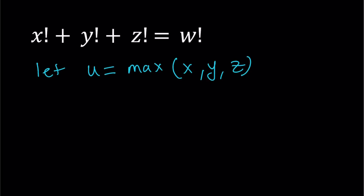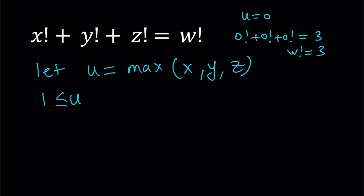Obviously, u is equal to x, or y, or z, or all of them. We know that u needs to be greater than or equal to one. Why am I excluding zero? Because if u is equal to zero, that means they're all zero. Zero factorial plus zero factorial plus zero factorial is one plus one plus one, which equals three. But there is no factorial equal to three, so we don't have a solution for u equal to zero. That's why u needs to be greater than or equal to one.